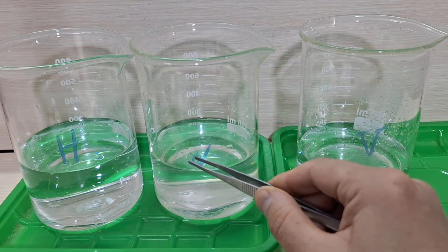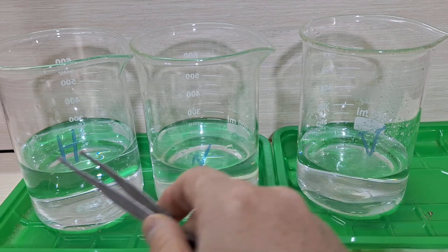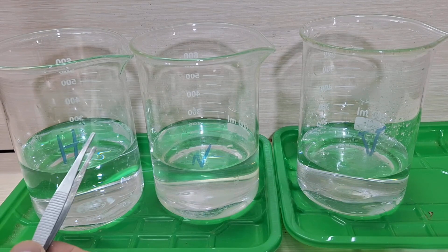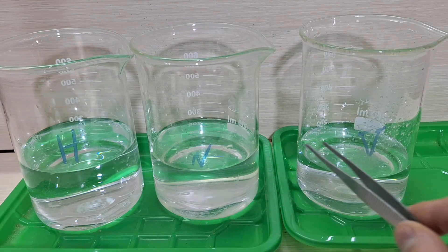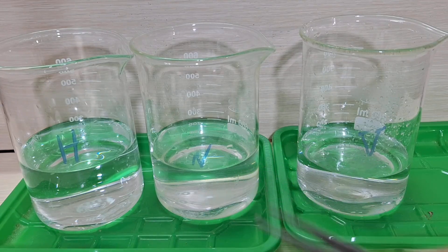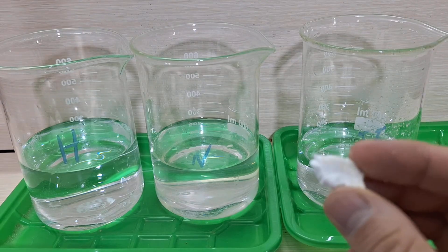To better observe how our acids work, we used three separate beakers filled with nitric acid, hydrochloric acid, and vinegar. Each one was diluted with water to keep the conditions equal. And now, we're adding a raw egg to each beaker.